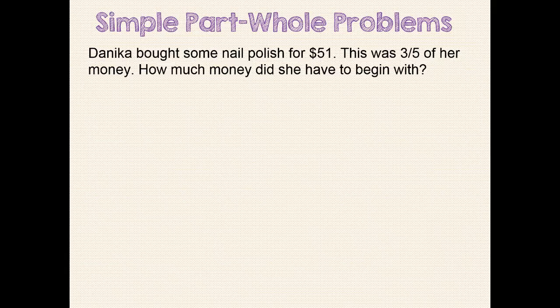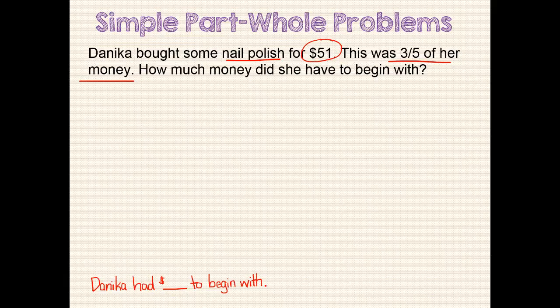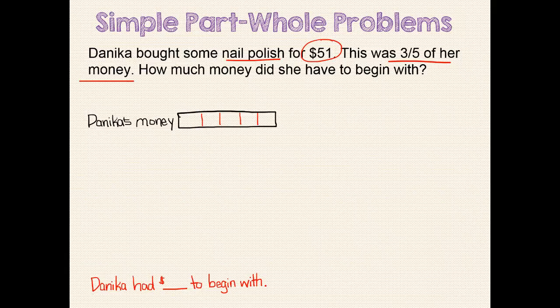When re-reading the problem, we identify the important information we need to solve the problem. The whole for this problem is the money Danica had to begin with, so this unit bar will represent Danica's money. We will subdivide it into 5 pieces because we are told that the $51 she spent was 3 fifths of her money. We can put our question mark at the end of the bar since we are asked to find the amount of money Danica began with.